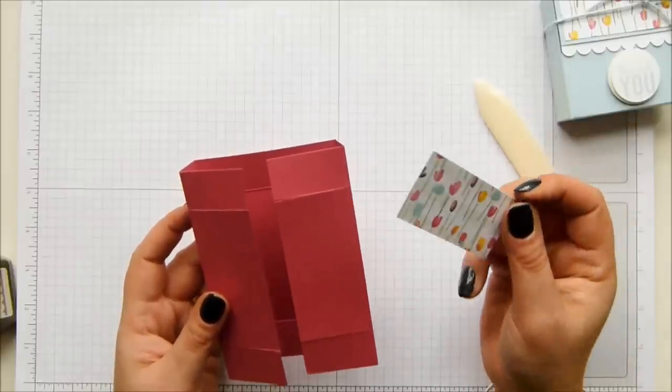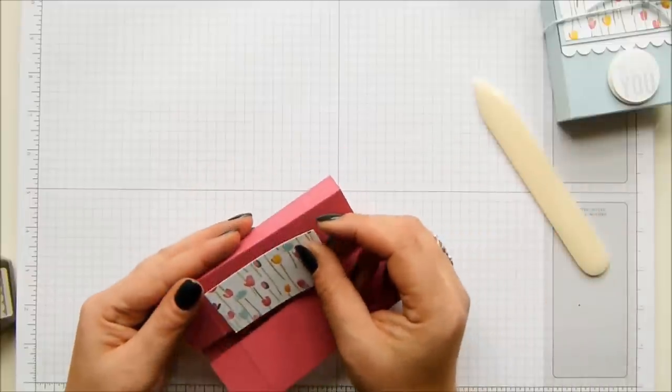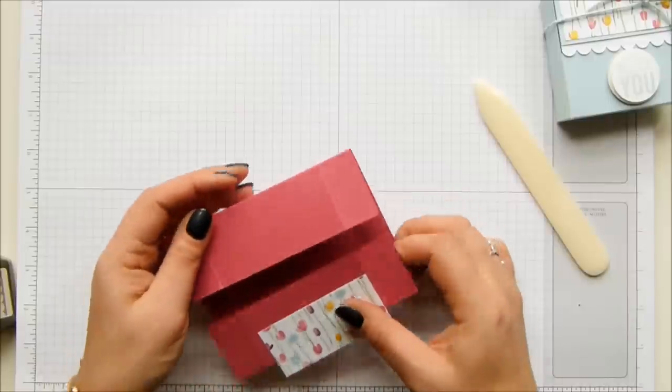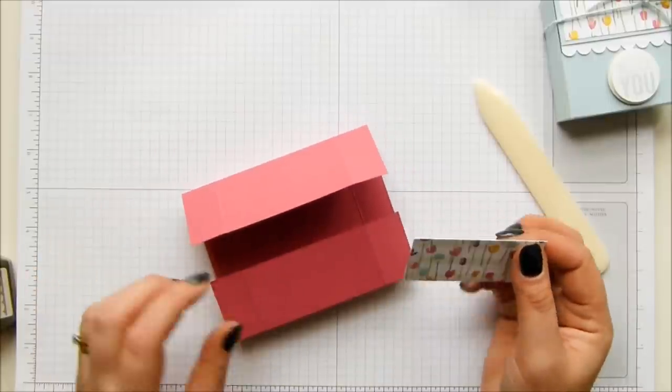When you are cutting your piece of DSP, make sure you're putting it on the correct one. You'll see when you lay it on that you'll know you've got the correct side round. That will be your top.